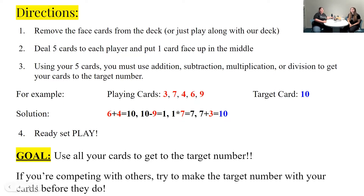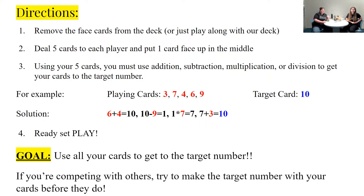So to start off, the first thing you want to do is remove all of those pesky face cards — any jacks, queens, kings, or jokers that might be in your set. Remove those out of your deck; you only want the number cards. The second step: you're going to deal five cards to each player. So if you're playing just by yourself you'll have five cards; if you're playing with two or more people, everyone will have five cards of their own. Then in the middle, or just by itself, you're going to put one card face up — that one card is called your target card.